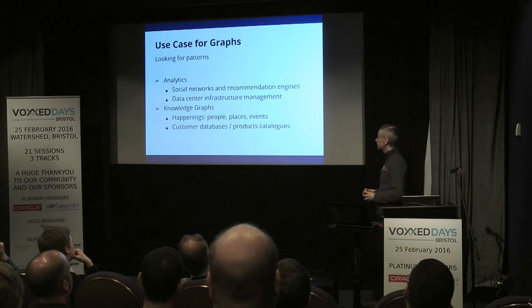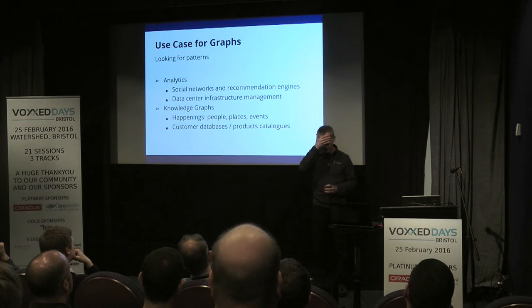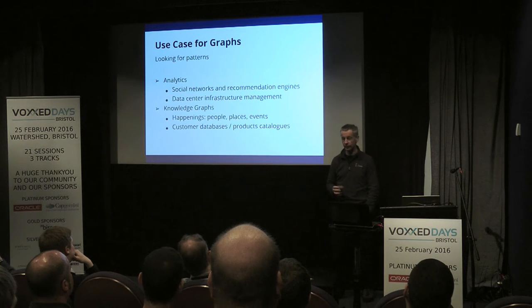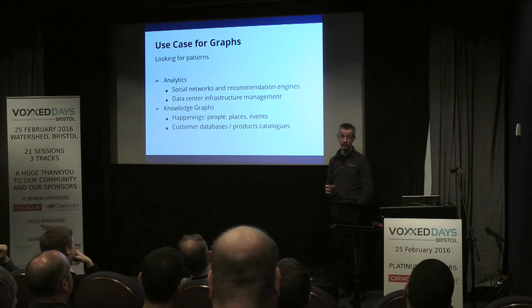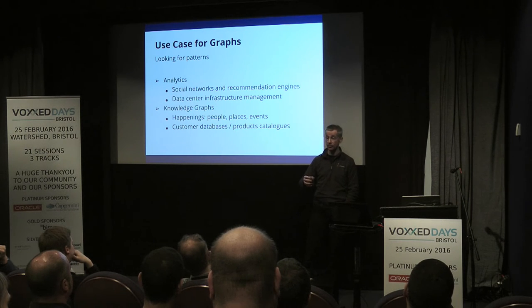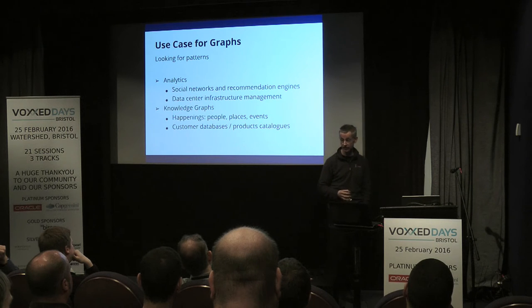Other analytics use cases include social networks and recommendation engines — you're actually using these quite a lot. If you go to Google and look up a restaurant and it tells you its opening times, there's a good chance that's driven off a graph from schema.org, where web pages are annotated with information about opening times and Google just scrapes it out. Google provides the vocabulary and terminology so people can embed it in web pages. Anyone can take that information — it's a web of data.